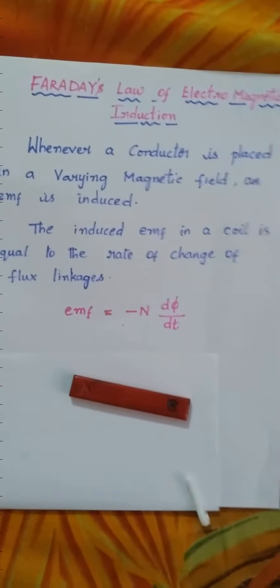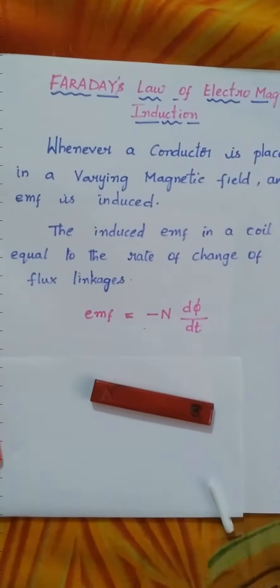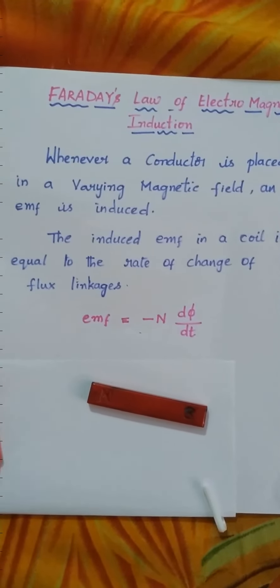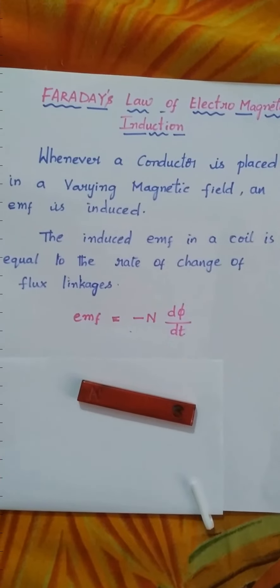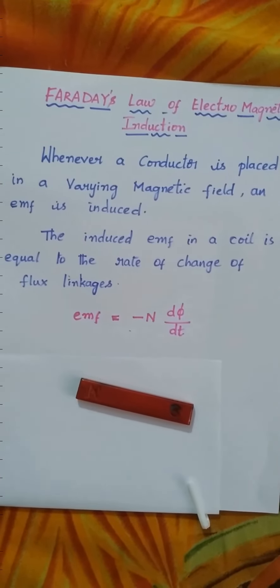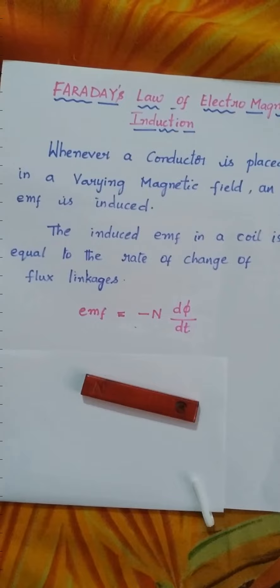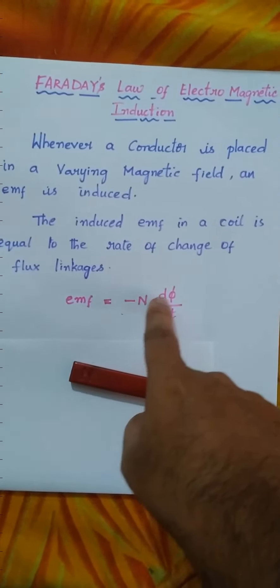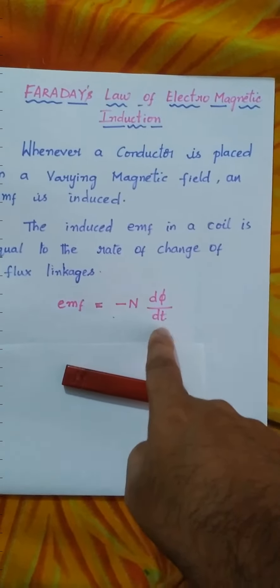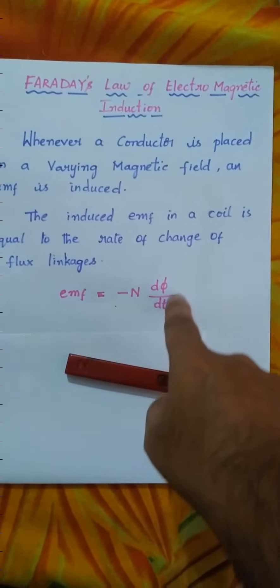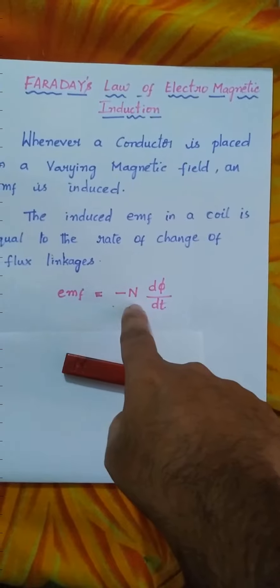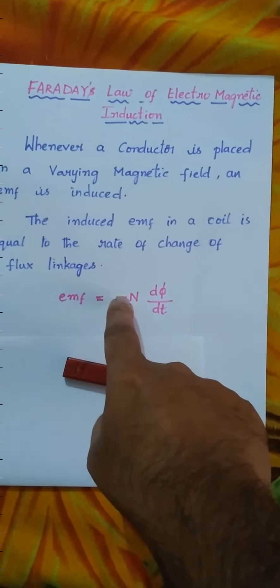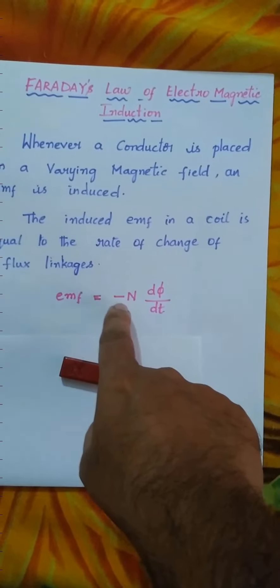So what is Faraday's Law? Whenever a conductor is placed in a varying magnetic field, an EMF is induced. The induced EMF in a coil is equal to the rate of change of flux linkages. EMF is equal to minus N into d phi by dt. This d phi by dt indicates rate of change of flux and N indicates number of turns. This minus sign is the direction of EMF explained by Lenz's Law.